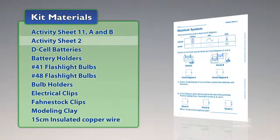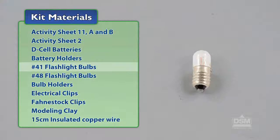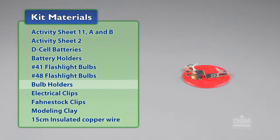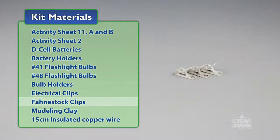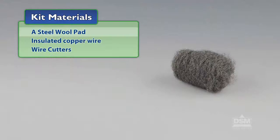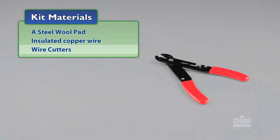You will need the following materials from the kit: Activity Sheet 11 Parts A and B, Activity Sheet 2 from Activity 2, D-cell batteries, battery holders, number 41 flashlight bulbs, number 48 flashlight bulbs, bulb holders, electrical clips, Fondstock clips, modeling clay from Activity 10, 15 centimeter insulated copper wire pieces, a steel wool pad, insulated copper wire, and wire cutters.